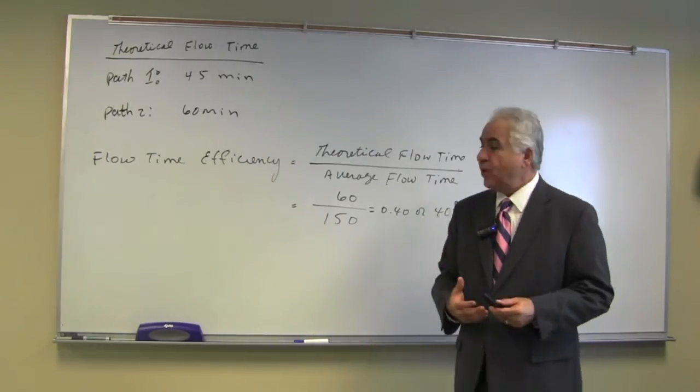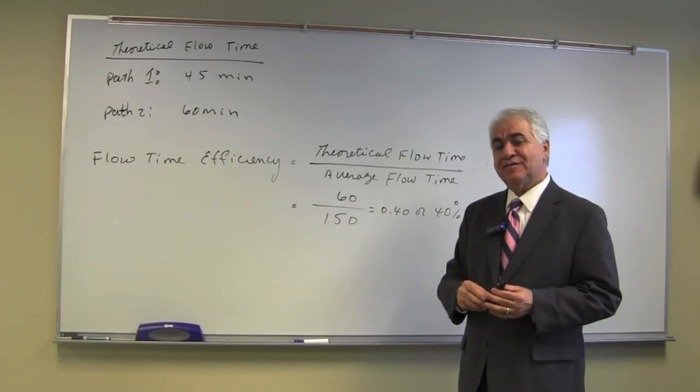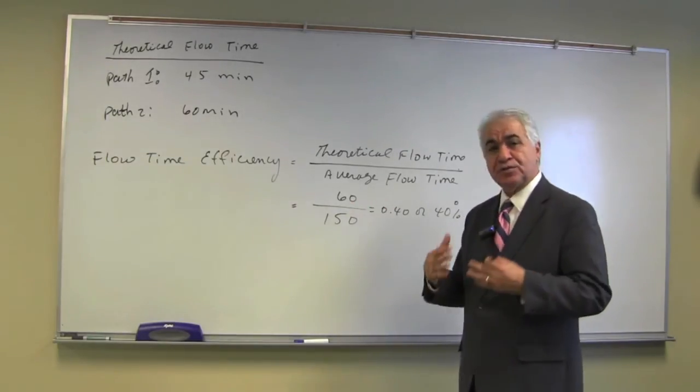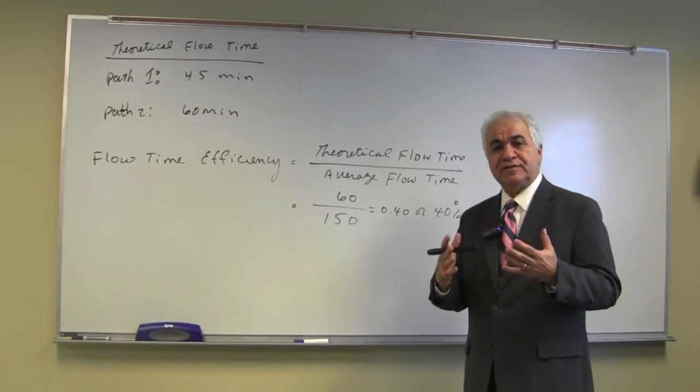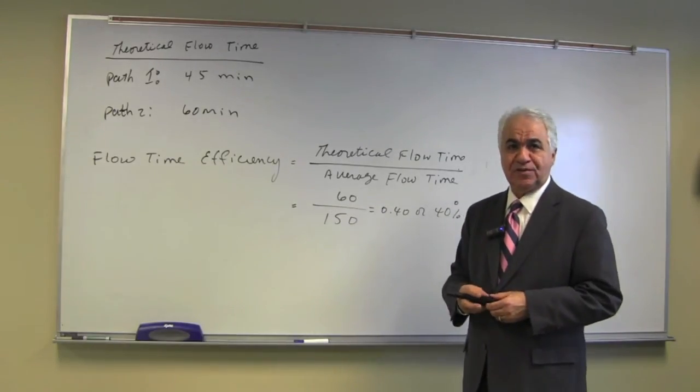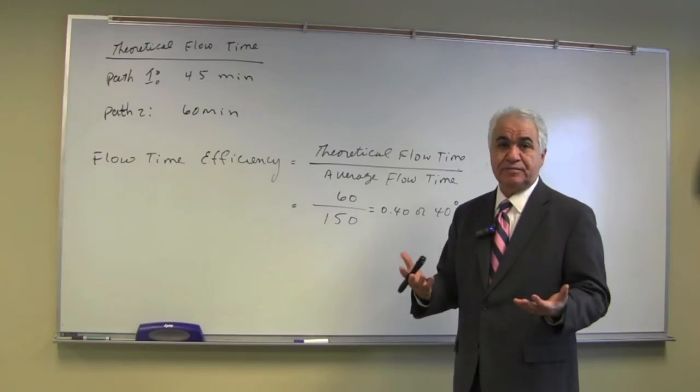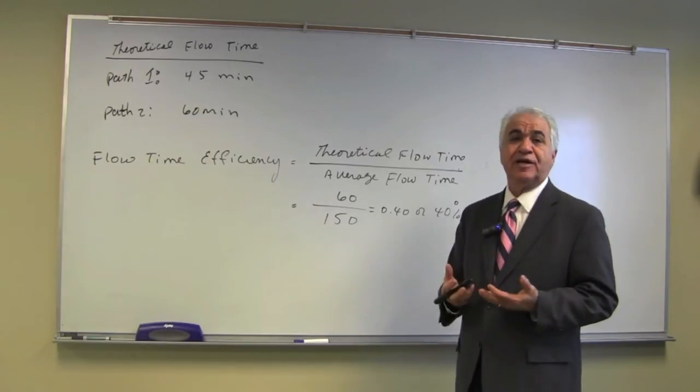So it begs the question: if the total flow time is 150 minutes and the theoretical flow time is 60 minutes, where does the difference of 90 minutes go? It is the buffer time or the wait time in the process.